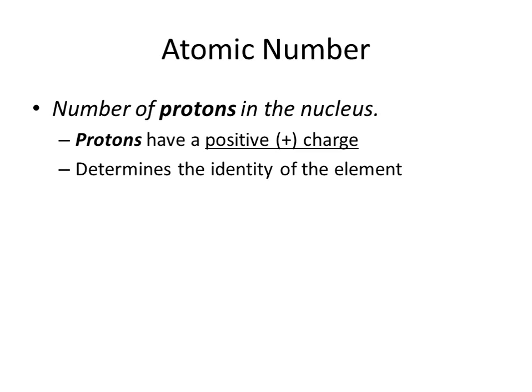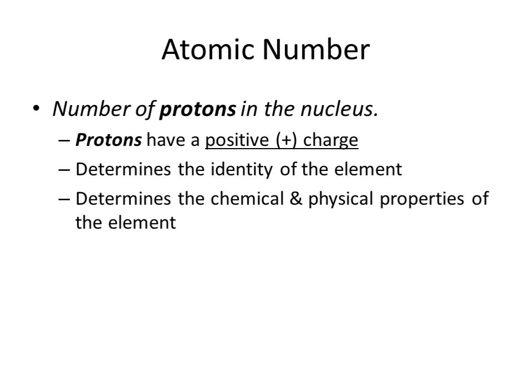What this atomic number does is it helps to identify what the element is. For instance, any atom that has six protons in it is an atom of the element carbon. Any atom that has 92 protons in it is an atom of the element uranium. So it's sort of like the social security number for a given atom. It also helps to determine what chemical and physical properties that given element is going to have.